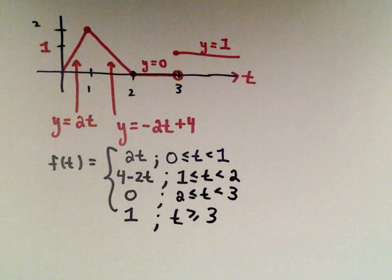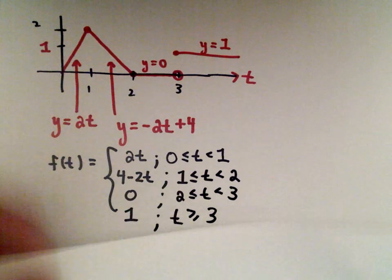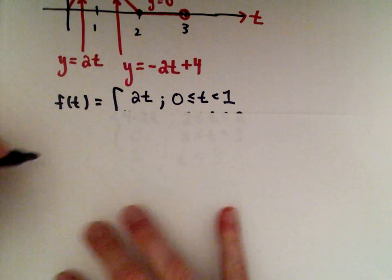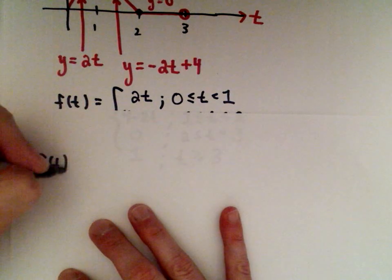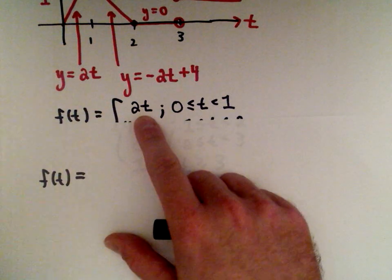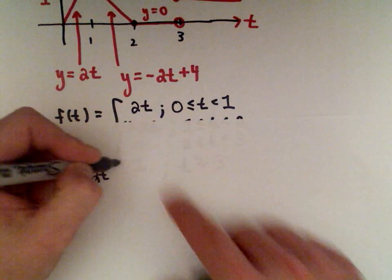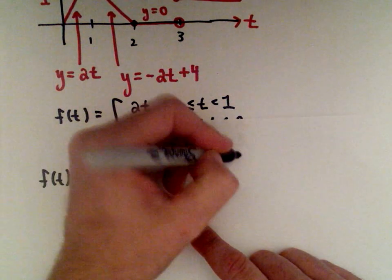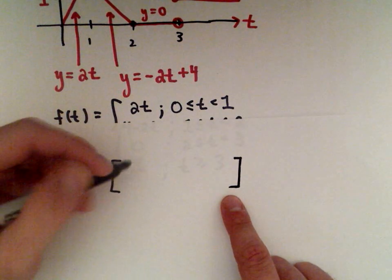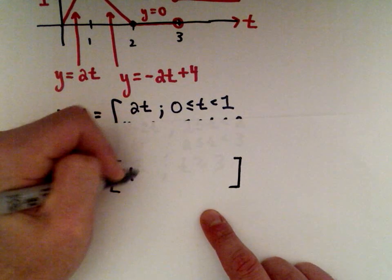Now the last thing we have to do is write it in terms of these unit step functions, and this is pretty straightforward. All you have to do at this point, you take your function, so the first part we had this function 2t. And then all I have to do is multiply that by an expression involving Heaviside functions.